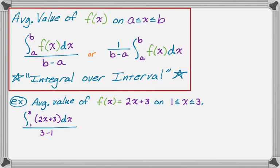What I do immediately is take the 3 minus 1 and bring it out as 1/2. Then I've got to integrate 2x + 3, which is going to be x² + 3x, just reversing the power rule. We're going from 1 to 3. So it's 1/2 times the quantity, and now I'm going to substitute 3.